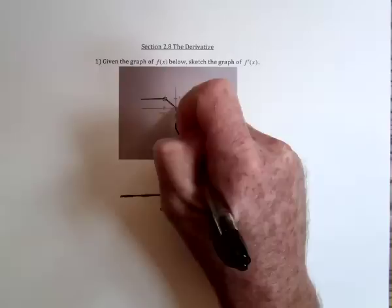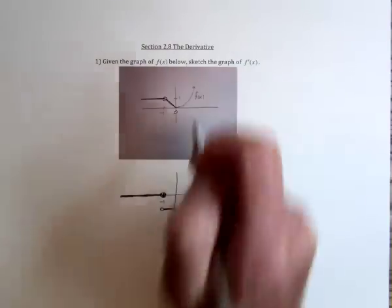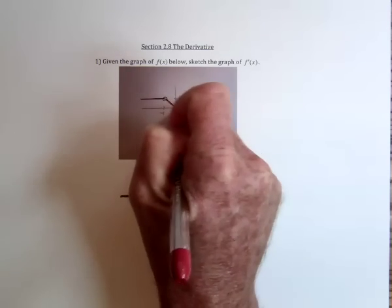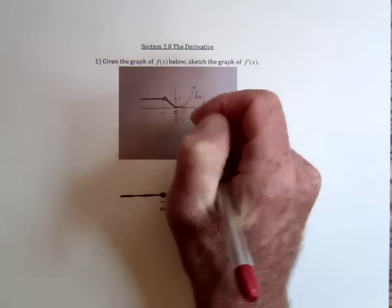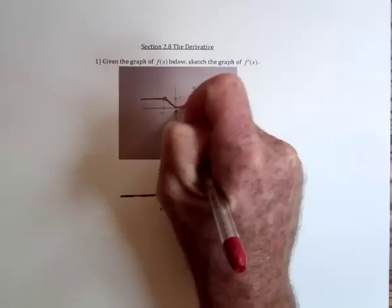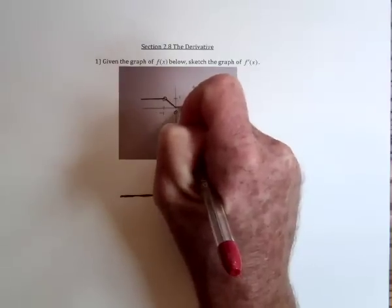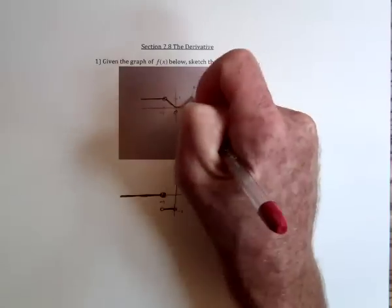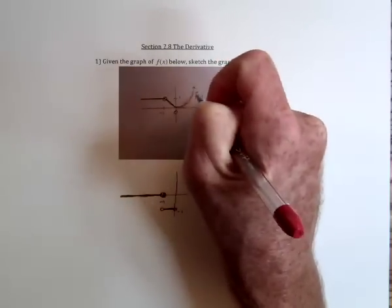And next, this looks like a parabola. The slope of the tangent line at the bottom would be zero because it would be a horizontal tangent line. Then, if you move over a little bit, the tangent line would look like this, have a slope of one, then go over here, and it's got a slope of two.